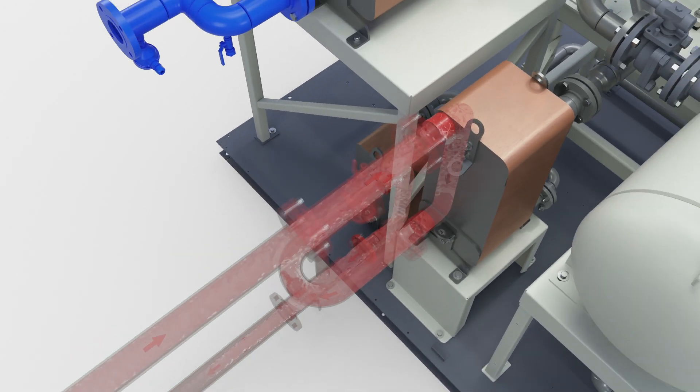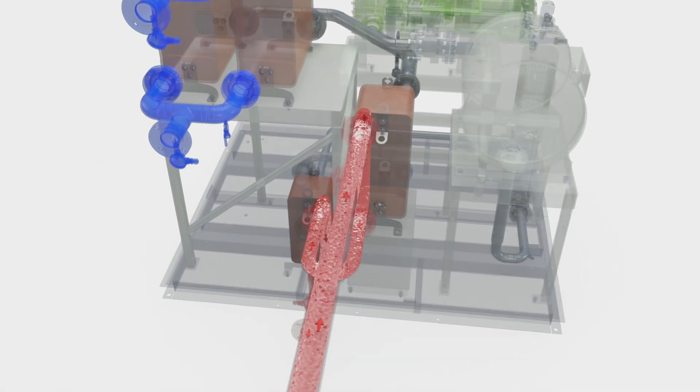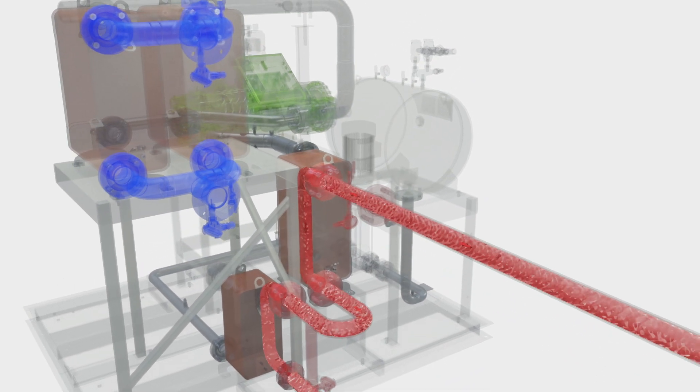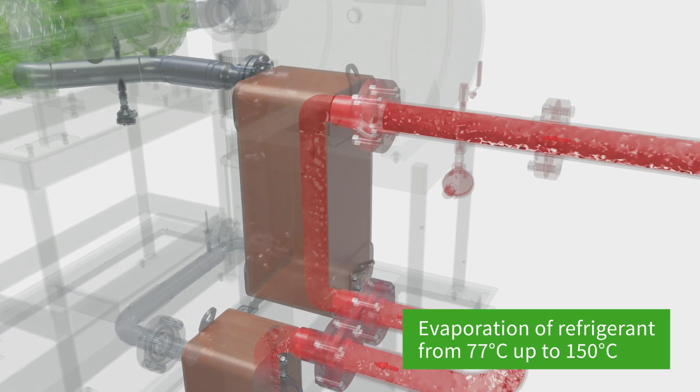In the organic Rankine cycle, waste heat is fed into the system such as through a water cycle in order to cause a refrigerant to evaporate, creating pressure which then drives the generator. The Power Plus makes this possible even at low temperatures.